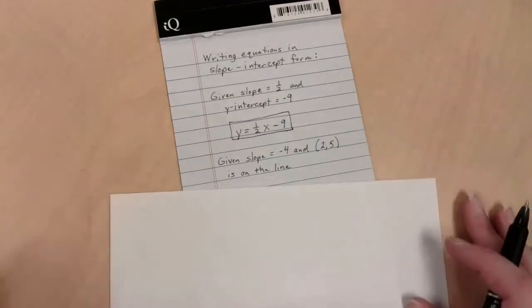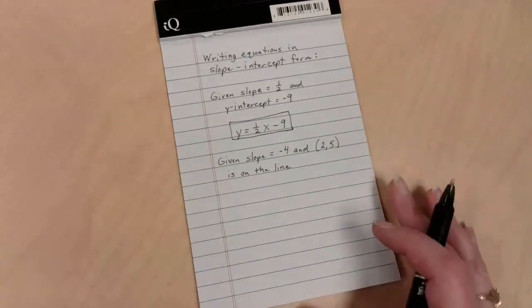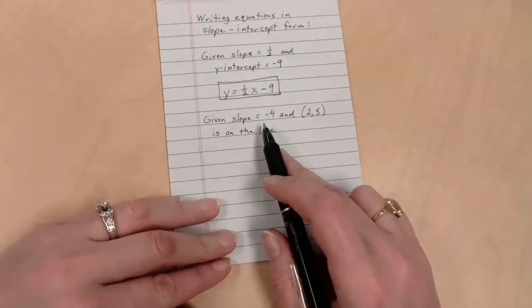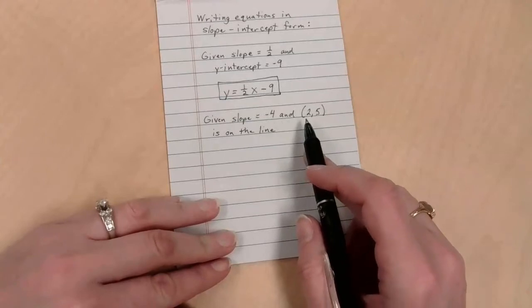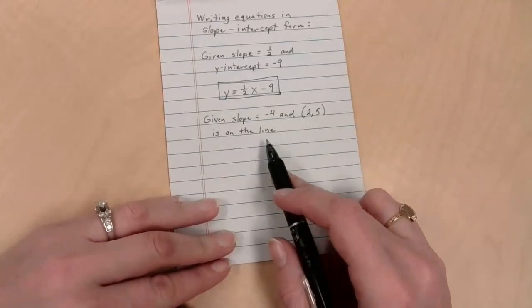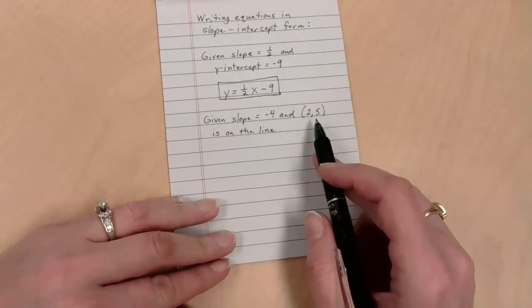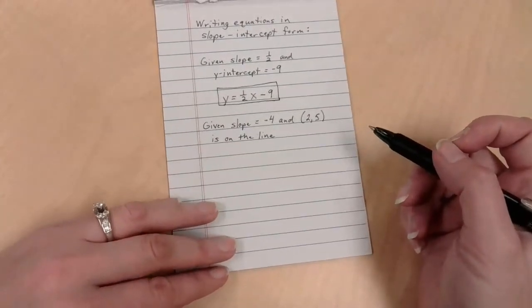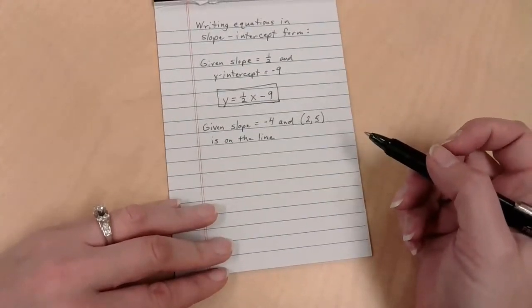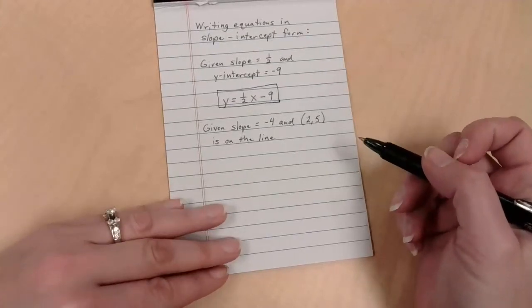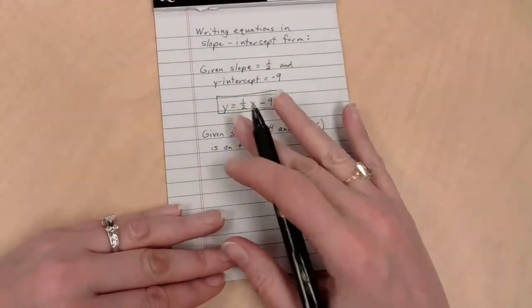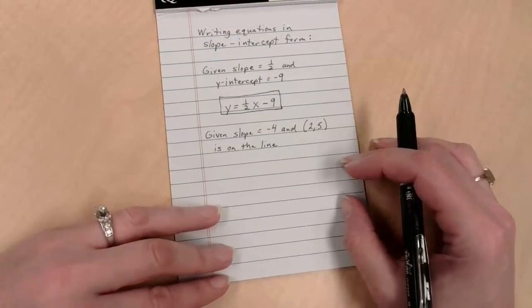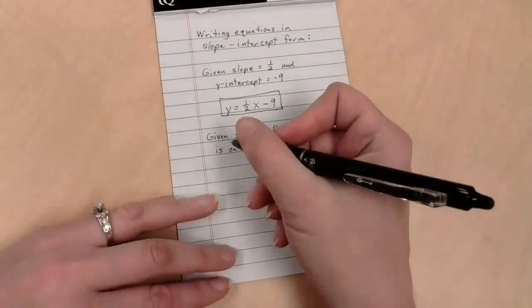Let me give you something that's not quite as nice. Still trying to write an equation, but this time we're given the slope and an ordered pair, a point, 2, 5. That point is on the line. That point is not on the y-axis. So that is not going to be my y-intercept. This means you have to do a little bit of extra work. I'm going to show you a method that I'm not fond of, but because we are focusing on slope-intercept form today, this is the best I've got.